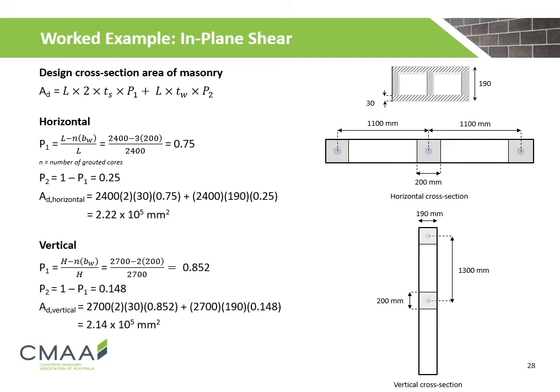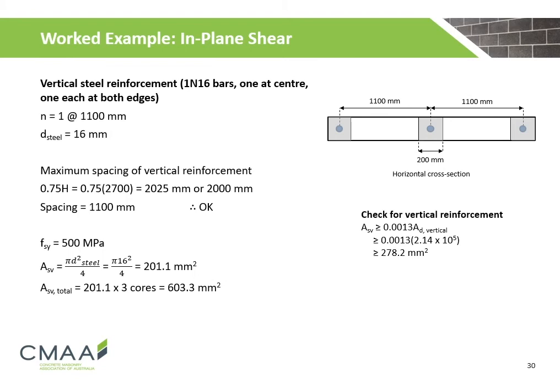The design cross-sectional area of masonry is calculated. In the horizontal cross-section there are three grouted cores. The ratio of ungrouted to total cores is 0.75 and the ratio of grouted to total cores is 0.25. The horizontal design bedded area is calculated to be 2.22 × 10⁵ mm². In the vertical cross-section there are two grouted cores. The ratio of ungrouted to total cores is 0.852 and the ratio of grouted to total cores is 0.148. The vertical design bedded area is calculated to be 2.14 × 10⁵ mm².